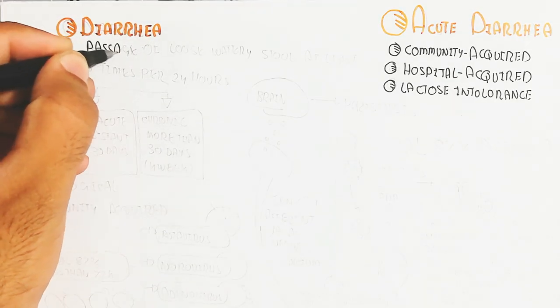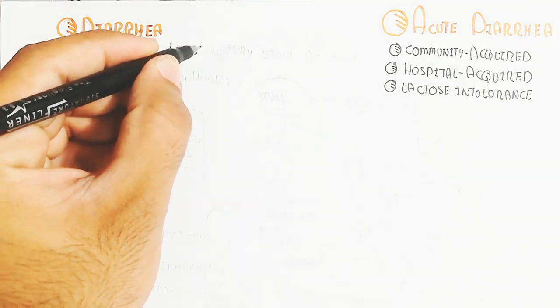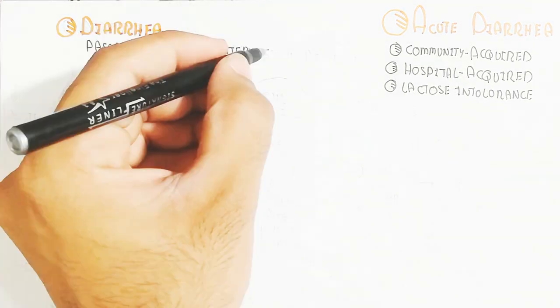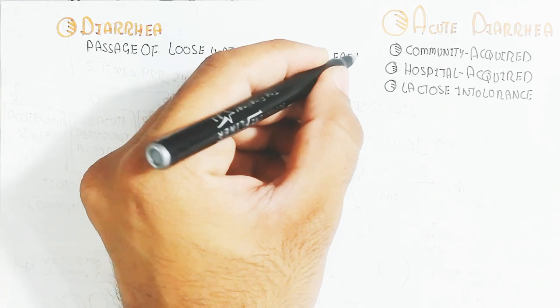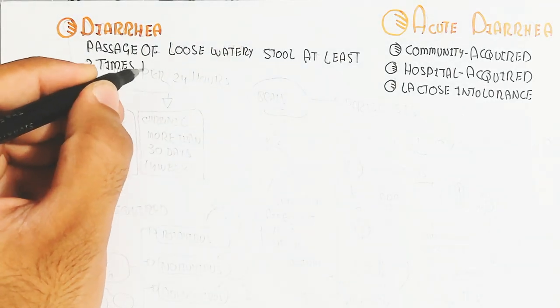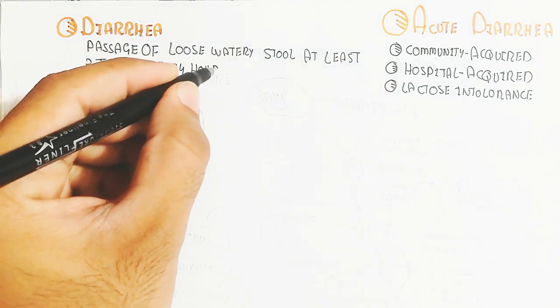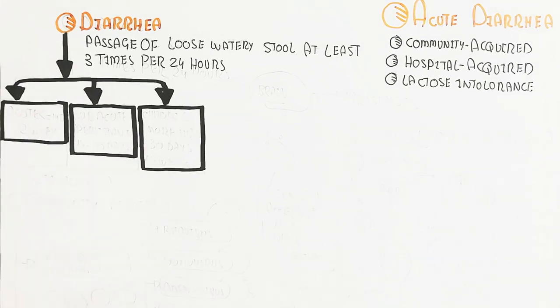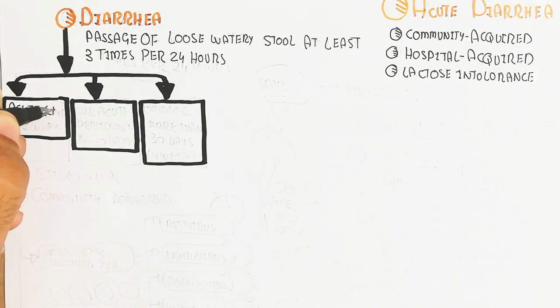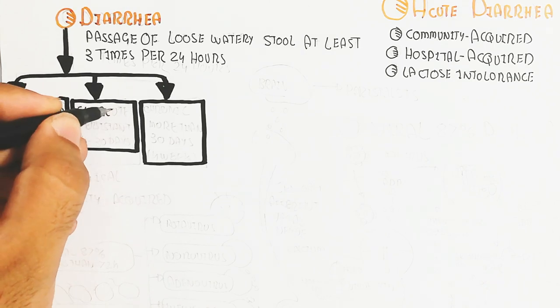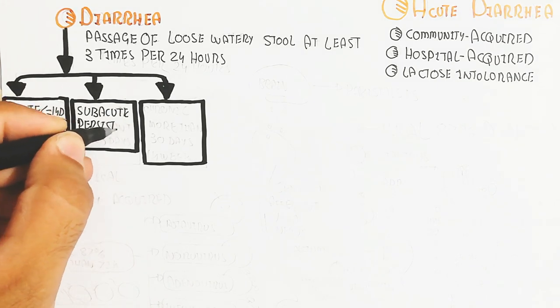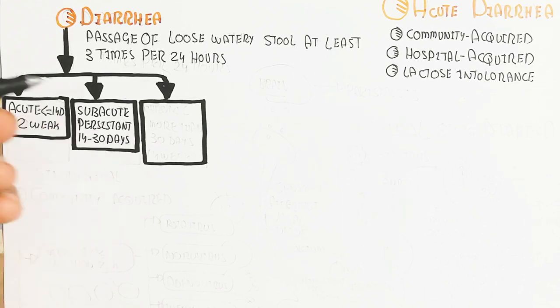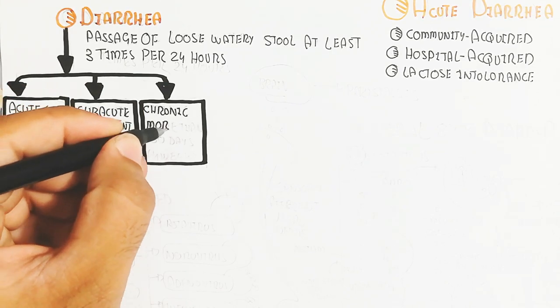Diarrhea is the passage of loose watery stool at least three times per 24 hours. It is classified based on duration. Acute is less than 14 days or two weeks, subacute or persistent is 14 to 30 days, while chronic is more than 30 days or more than four weeks.